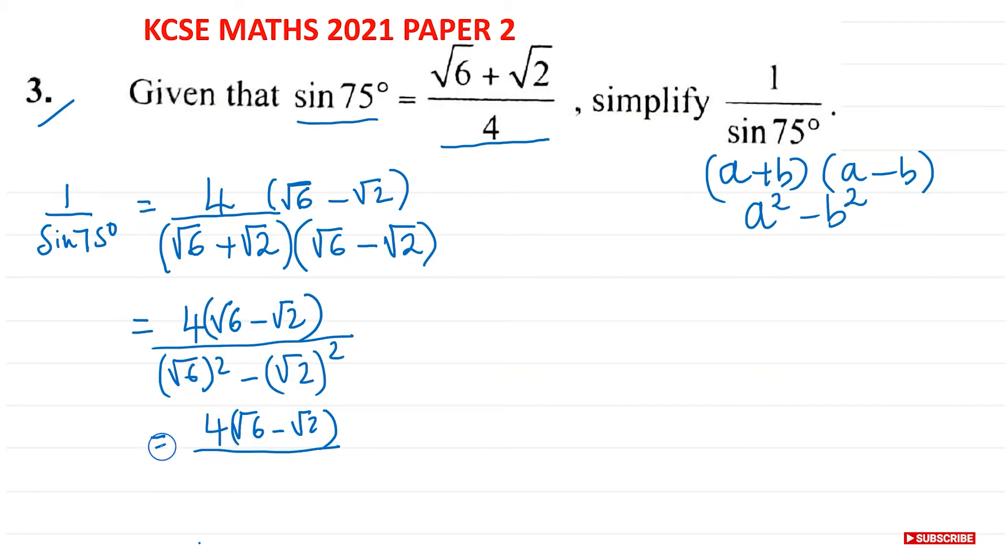Now root 6 squared, that becomes just 6. Take away root 2 squared becomes 2. So if I carry on over here, you will get 4 root 6 minus root 2 over 6 minus 2 is 4.